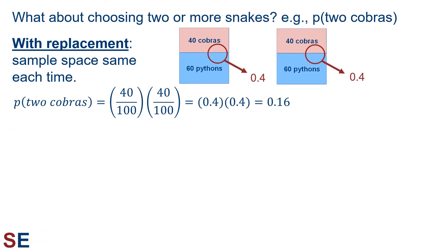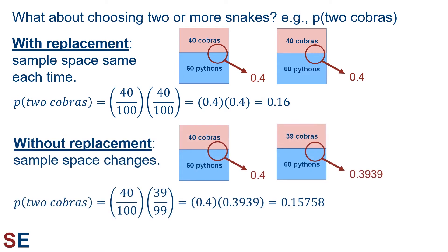Let's think about a situation in which we choose two snakes from the population and we're interested in the probability that they're both cobras. For sampling with replacement, the sample space or population is identical each time, so our probability of cobra and cobra is equal to the probability of cobra times the probability of cobra, which is 0.4 times 0.4 equals 0.16. For sampling without replacement, for the first choice the probability of cobra is 40 out of 100, which is 0.4. But for the second choice, the sample space now has 39 cobras and an overall size of 99 snakes, so the probability of choosing a cobra is 39 out of 99, which is 0.3939. Our probability of cobra and cobra is therefore 0.4 times 0.3939 equals 0.15758.